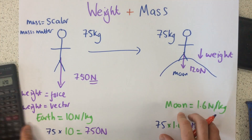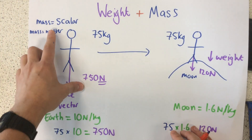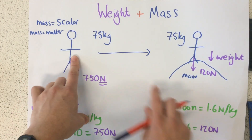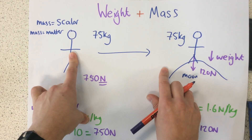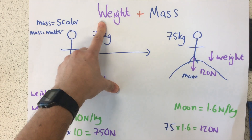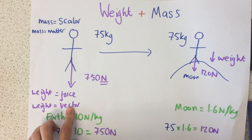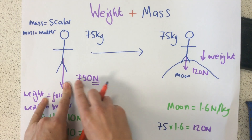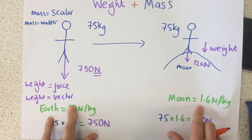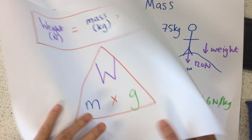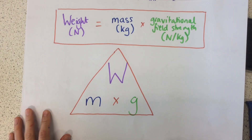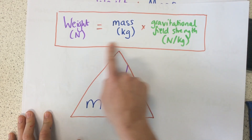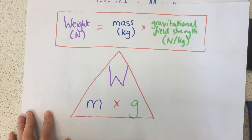So that is the difference between weight and mass. Remember: mass is a scalar quantity — it's the matter in your body, and it's the same no matter where you are in the universe. Your weight is a force, a vector quantity, measured in newtons, and it changes depending on the gravitational field strength. The equation to know is: weight equals mass times gravitational field strength, and here's the equation triangle to support that.